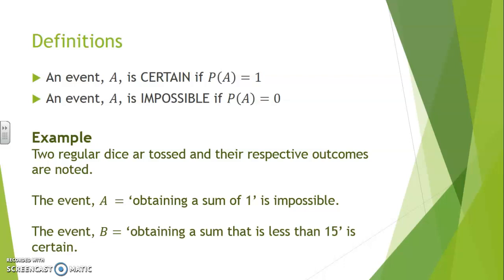The event B, obtaining a sum that is less than 15, is certain, since the sum of two dice cannot exceed 12. So P of B would be 1.